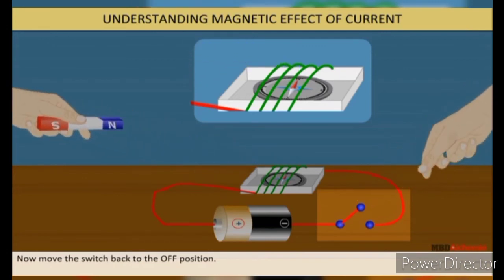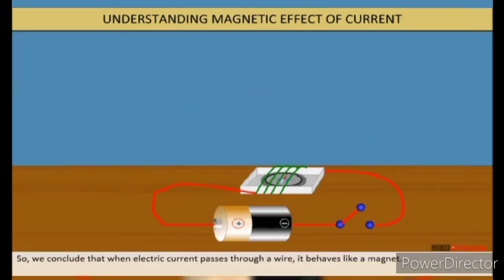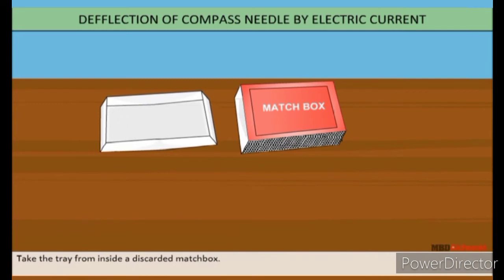Now, move the switch back to the off position. We will observe that the needle comes back to its original position. So, we conclude that when electric current passes through a wire, it behaves like a magnet.